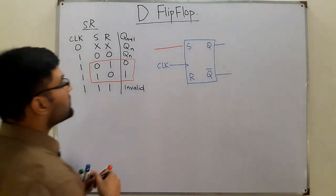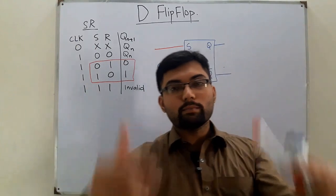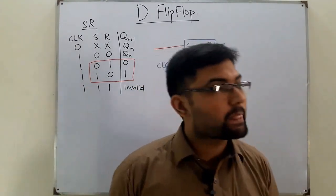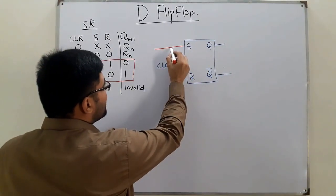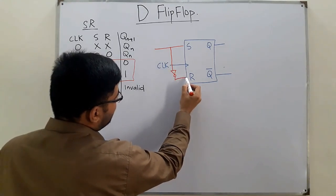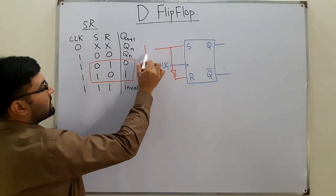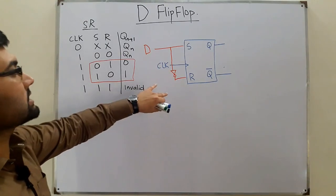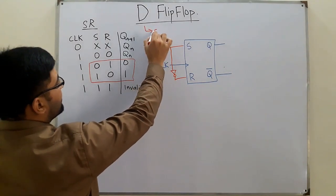In the D flip-flop, instead of providing the two inputs as opposites of each other, we provide a single input with a NOT gate. We provide the S input, and then we have an inverter — that is the NOT gate — which provides the R input. This input is called the D input, and by doing this we have converted the SR flip-flop to the D flip-flop. D basically stands for data.